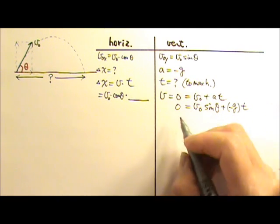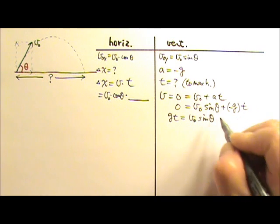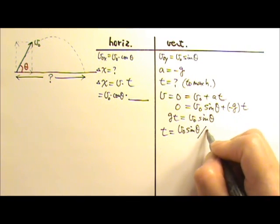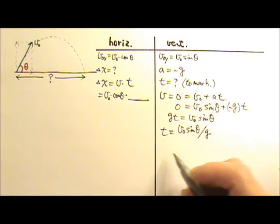If I move this one over, I have GT equals to this. And that means the time would be V₀ sine theta divided by G. Now this is the time to the maximum height.